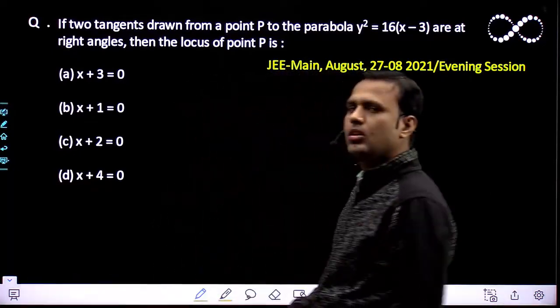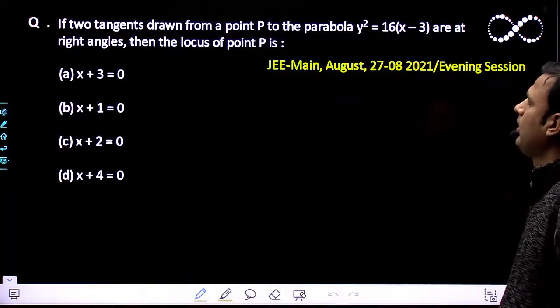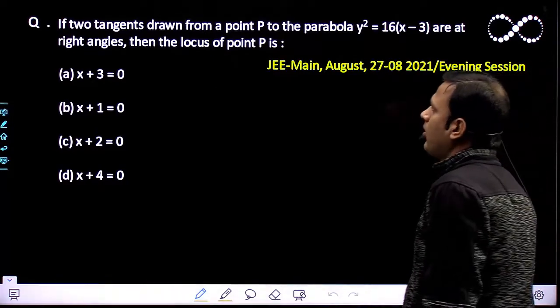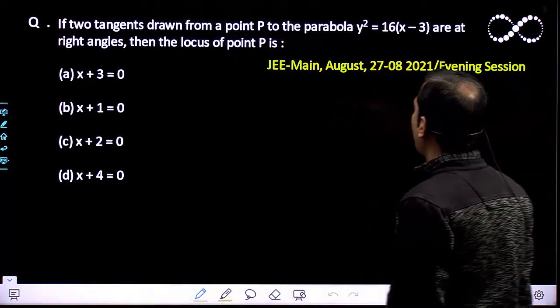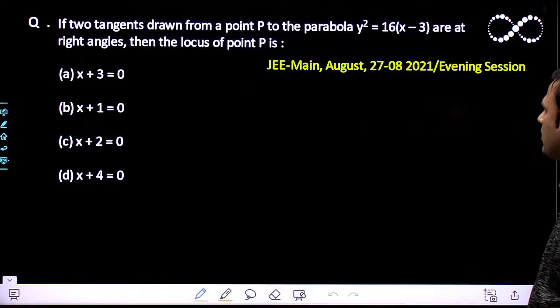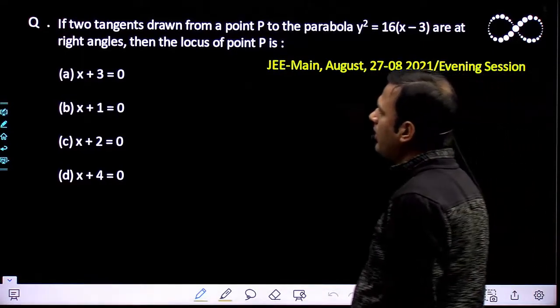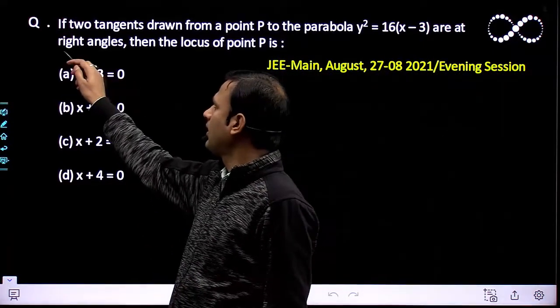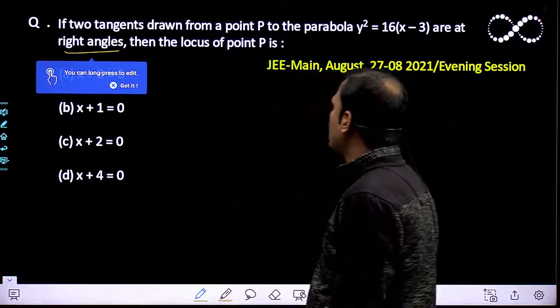Hello students. Let's see what we need to find in this question. If two tangents drawn from a point P to the parabola y² = 16(x - 3) are at right angles, then the locus of point P is...